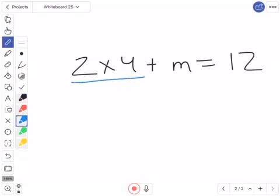Well, what I'm going to do, my first step then is going to be 2 times 4. Well, I know that 2 times 4 equals 8. Now, it's going to be 8 plus m equals 12.